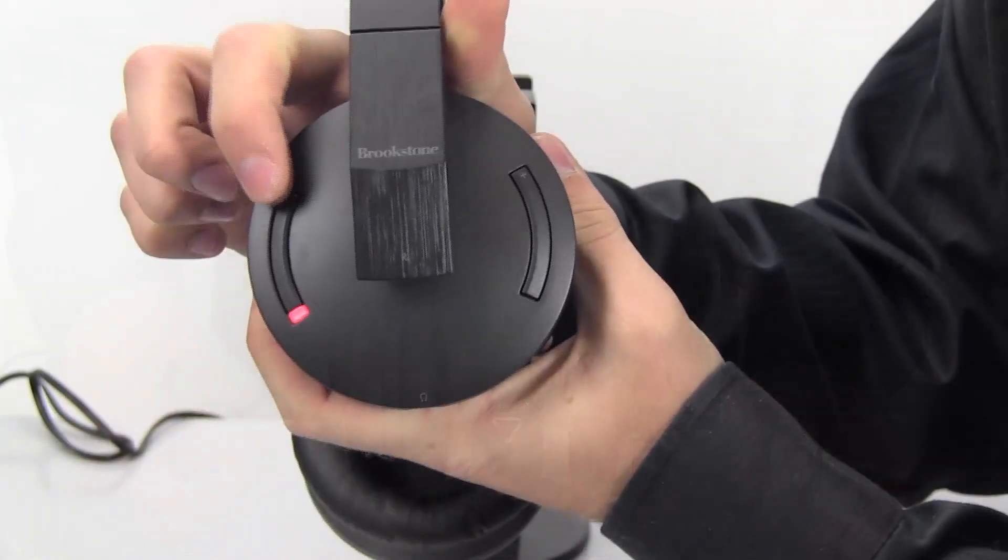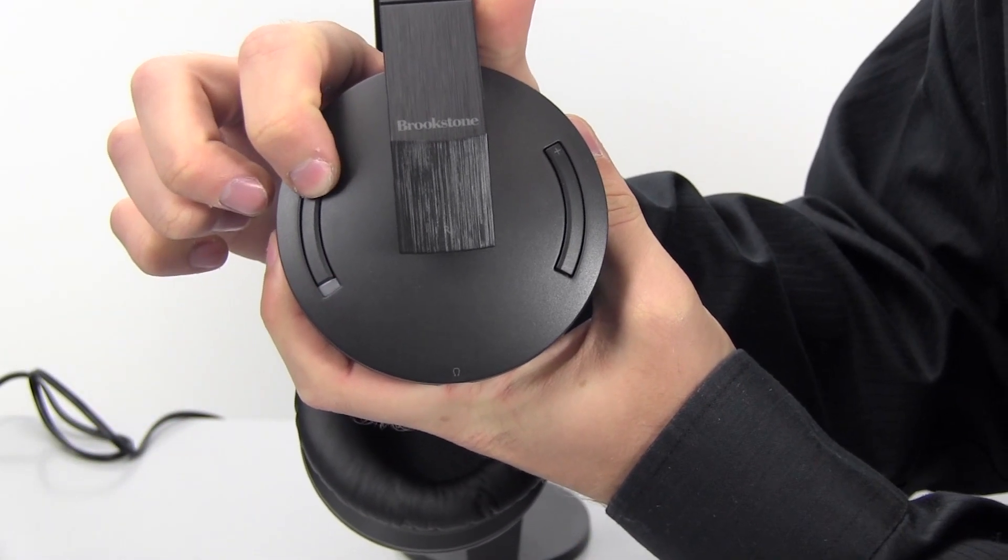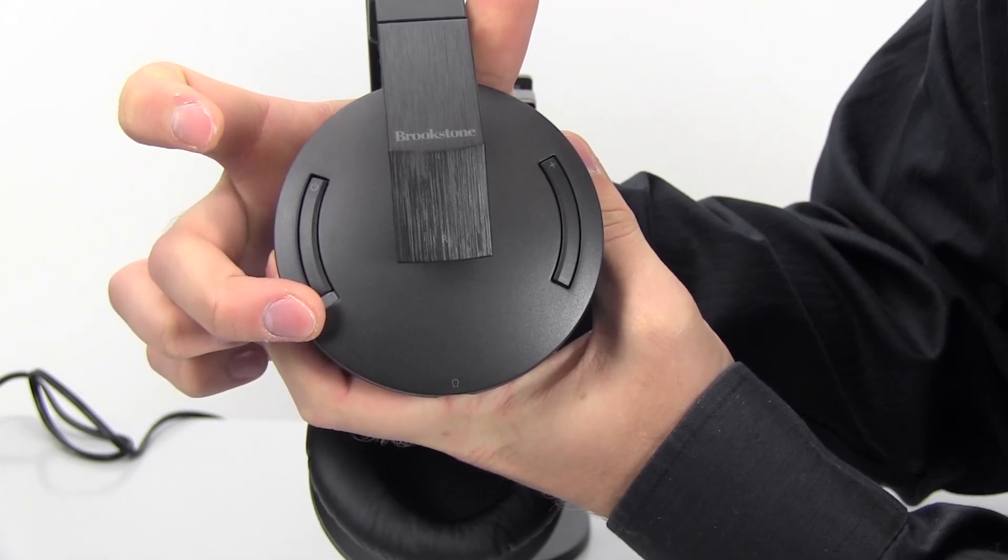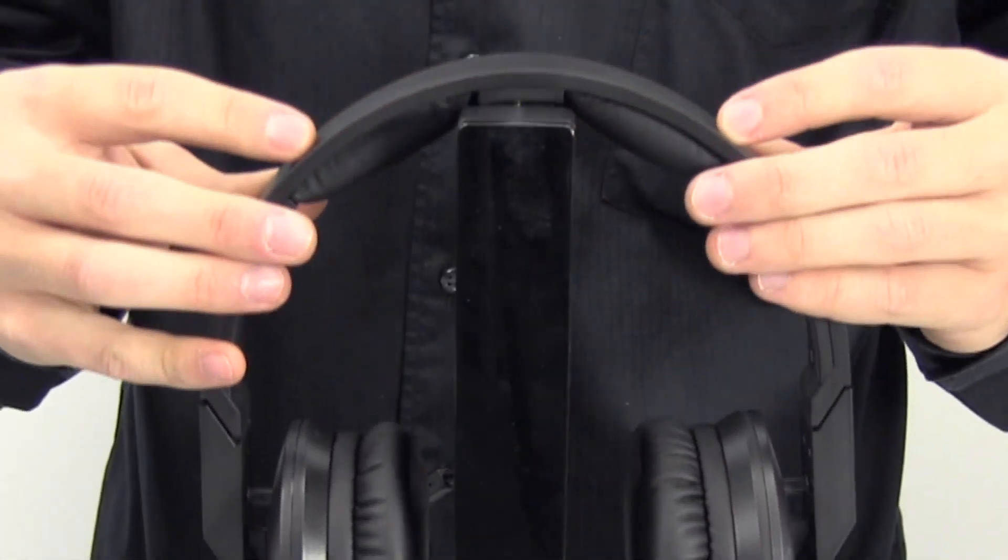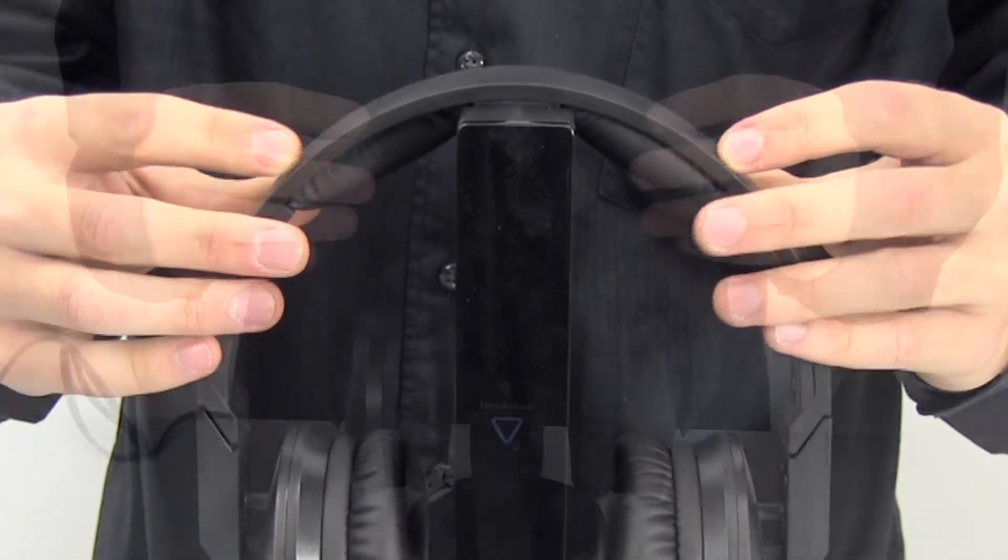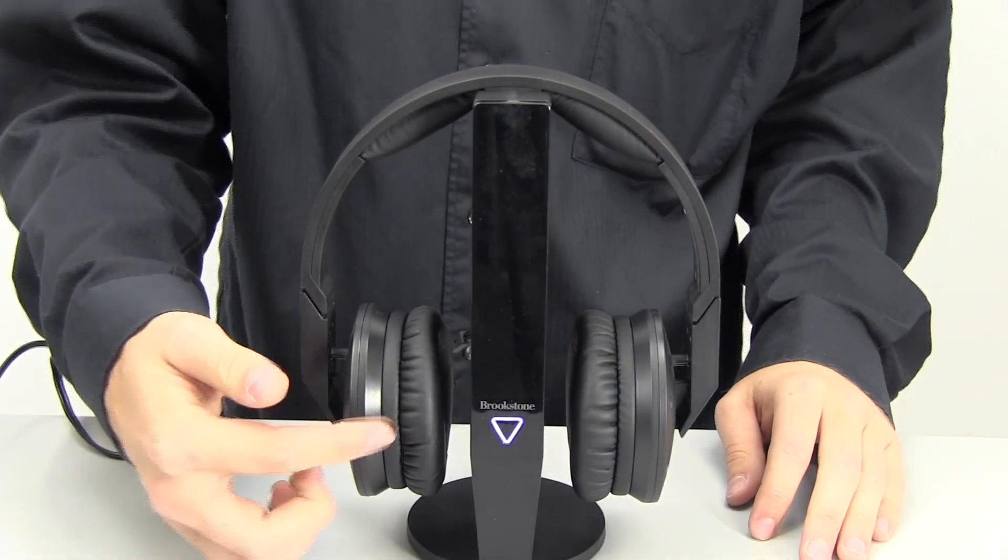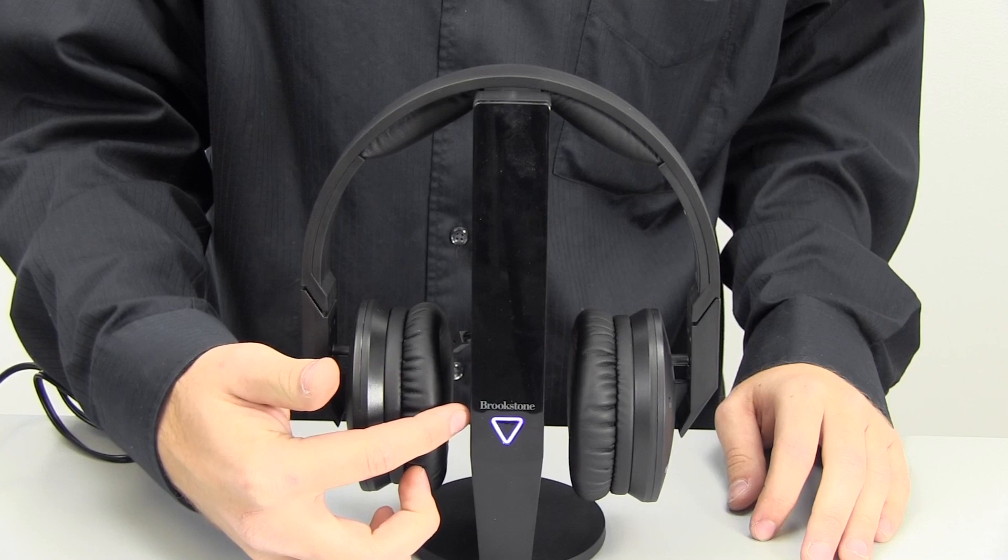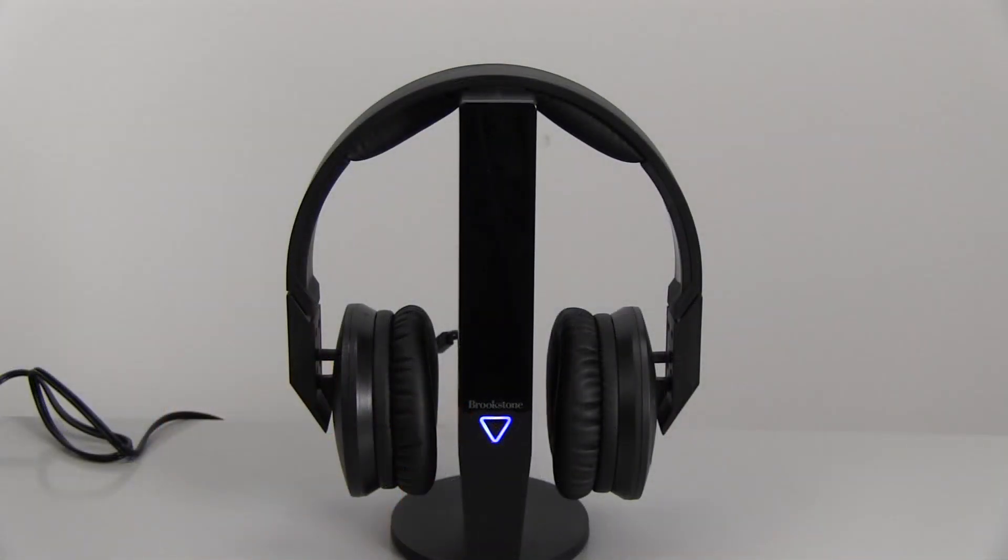Make sure the headphones are off by pressing the power button on the right earpad. The power LED should be off. Then place the headphones on top of the transmitter, ensuring the charging contacts are aligned. The transmitter LED is purple to show that the headphones are now charging. When the headphones are fully charged, the transmitter LED will show blue.